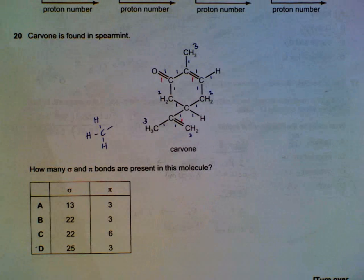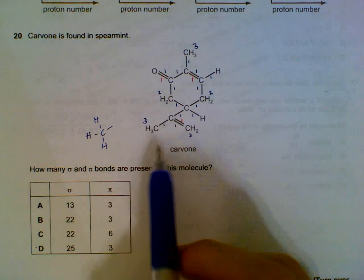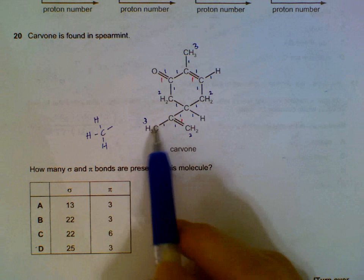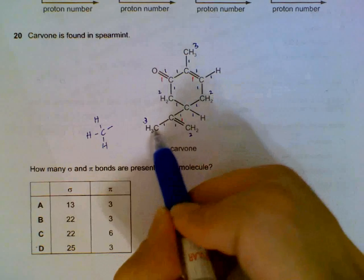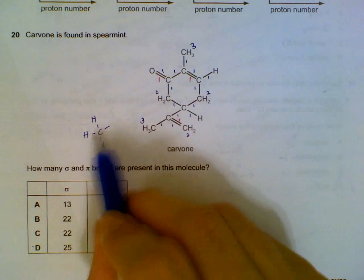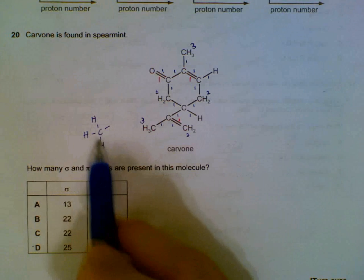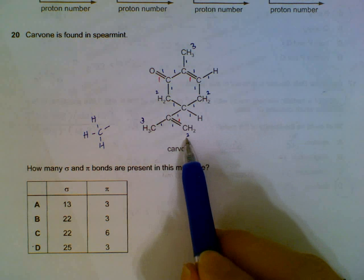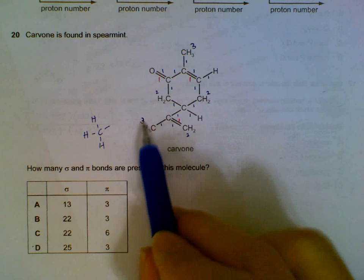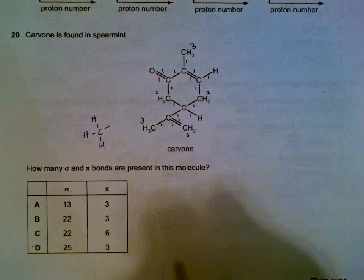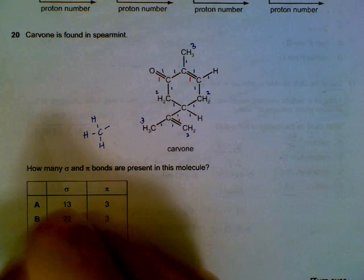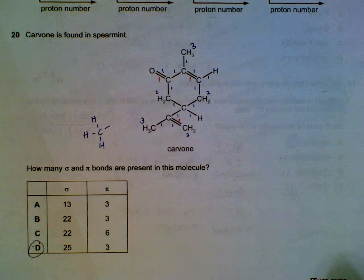Question 20: sigma bonds versus pi bonds. The sigma bonds in the carbon and hydrogen, you have to be careful to include them also. They are not drawn out explicitly in the diagram. For example, CH3, we actually look like this: 1 carbon with 3 hydrogen. There are 3 sigma bonds you have to include also in your calculations. Same for here, CH2, there are 2 sigma bonds. If we add everything up carefully, the blue color ones are the sigma bonds. The red color are the pi bonds. We have 25 sigma and 3 pi bonds.